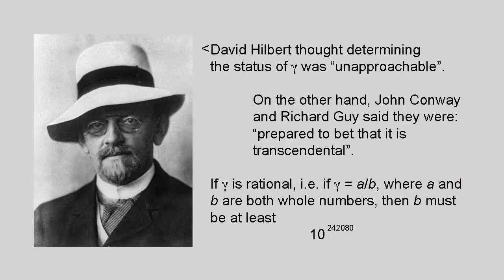In fact, establishing the status of gamma is a major unsolved problem in maths. The great German mathematician David Hilbert thought the problem in his day was unapproachable. Two giants of number theory, the British mathematicians John Conway and Richard Guy, have said they are prepared to bet that it is transcendental. All we can say for sure at the moment is that if gamma is rational, in other words can be written as A over B, where A and B are both whole numbers, then B must be at least 10 to the power 242,080.